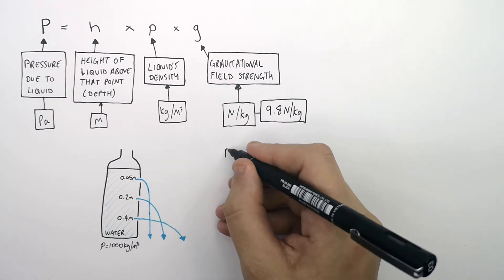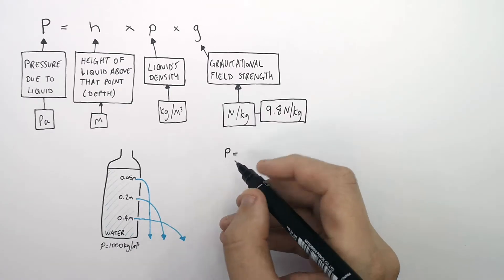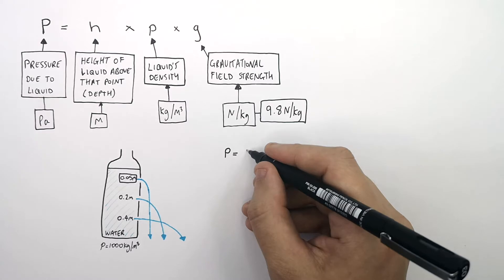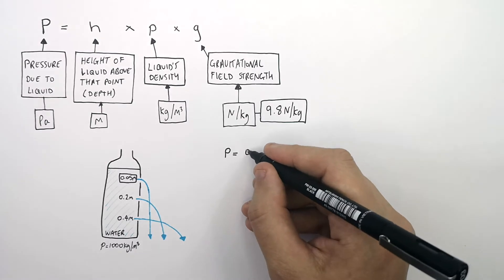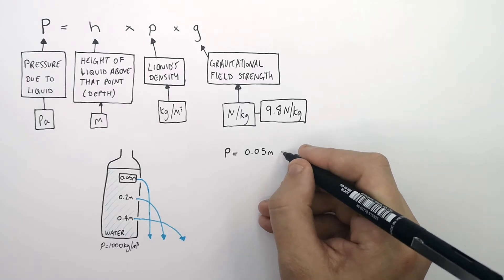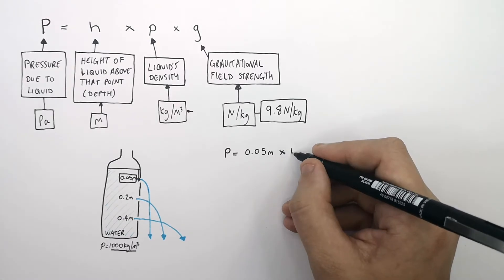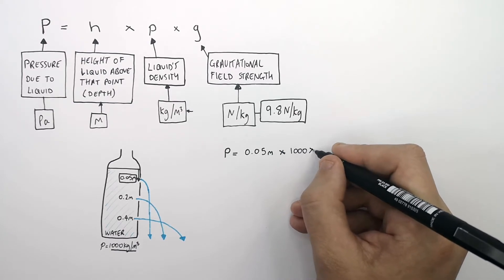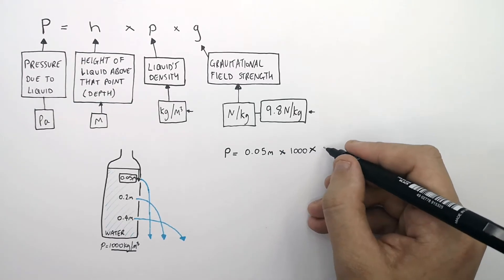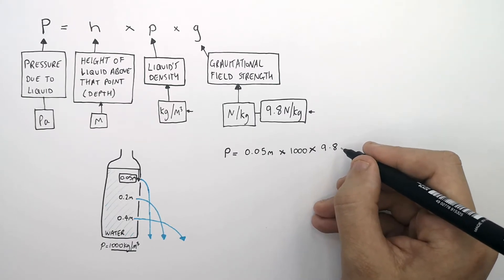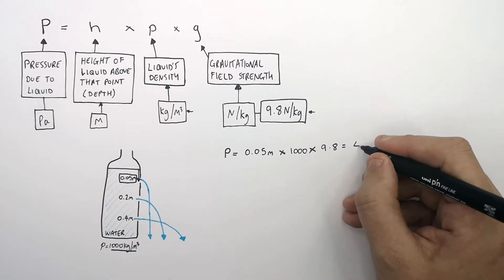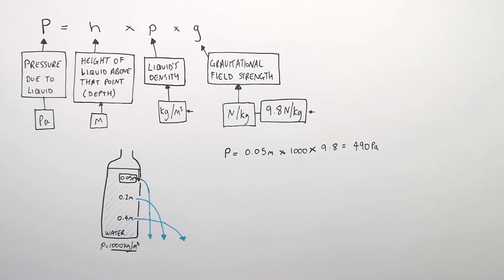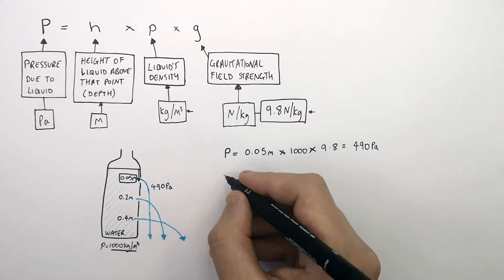To calculate P, the pressure due to the liquid at the first hole at 0.05 metres: P equals the height of the liquid above that point, which is the depth — 0.05 metres — times by the liquid's density, 1000 kilograms per metres cubed, times by the gravitational field strength on Earth, 9.8 newtons per kilogram. That gives a pressure due to the liquid of 490 Pascals.